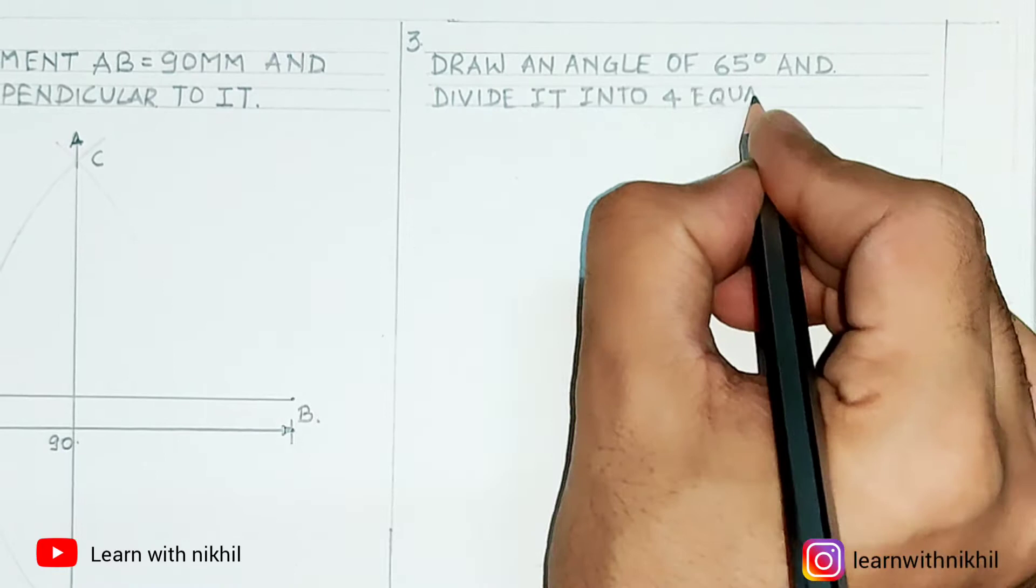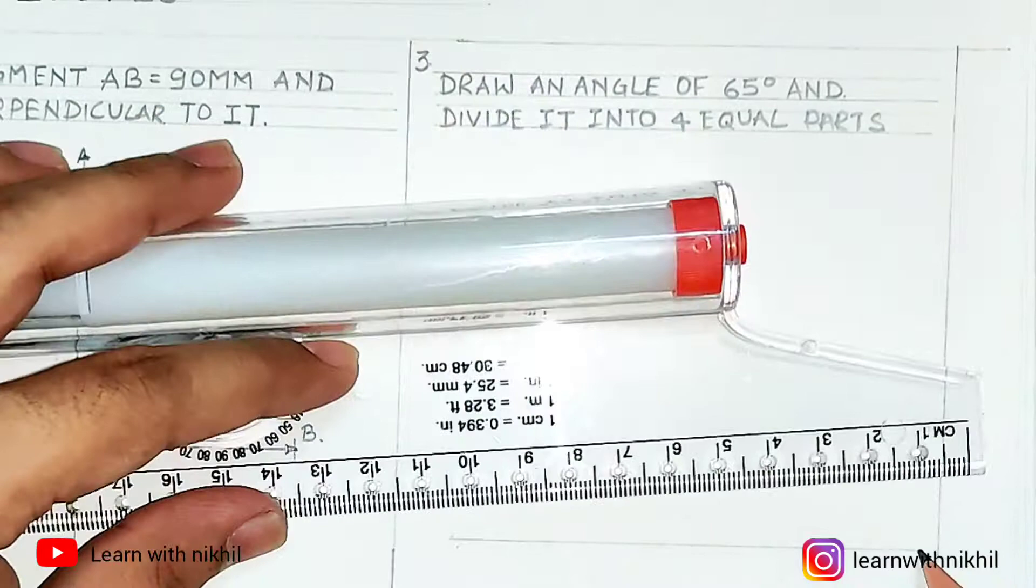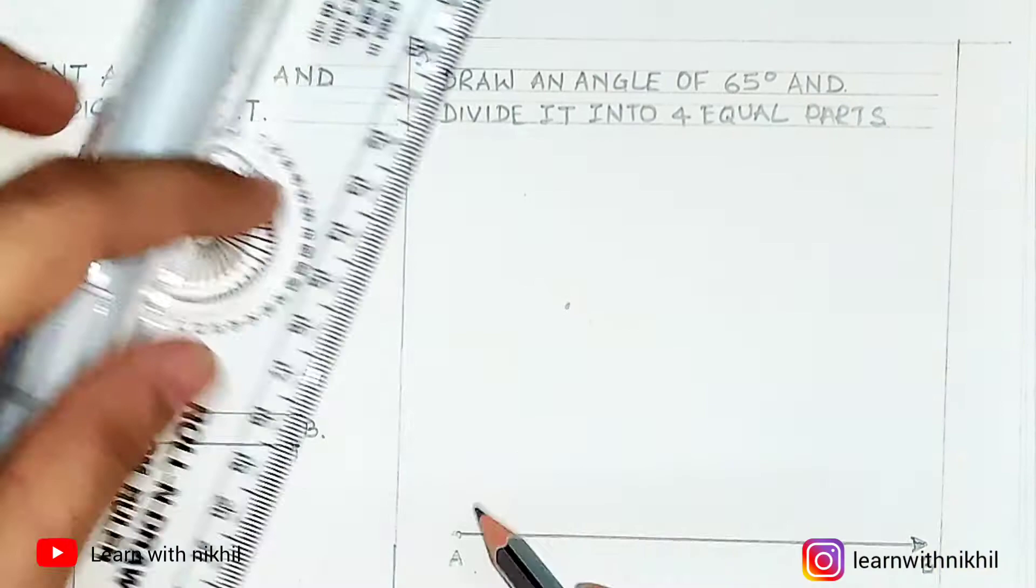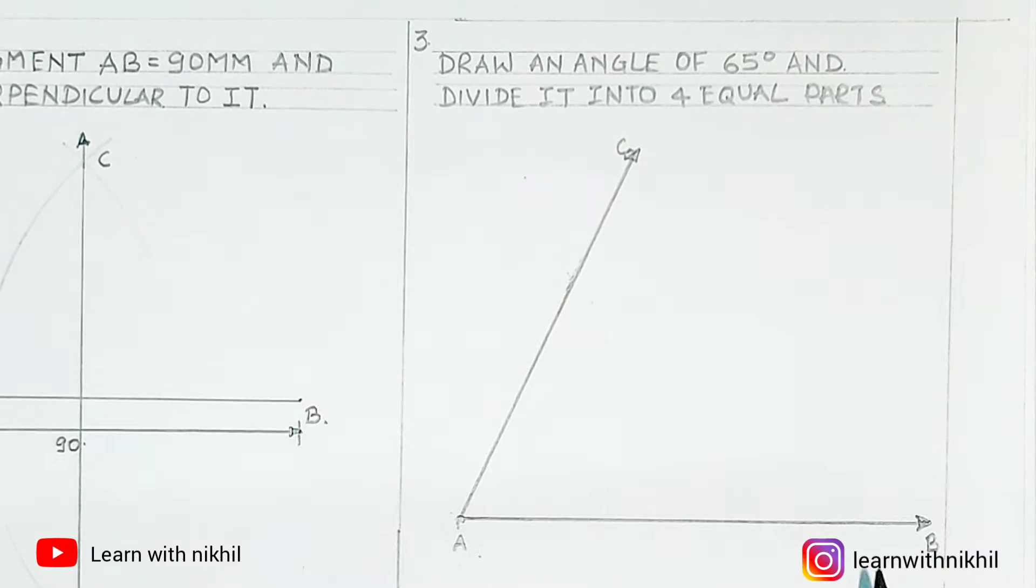Next is: draw an angle of 65 degrees and divide it into four equal parts. Any angle might be given and you should be able to divide the angle into any number of equal parts. Here it has been asked four equal parts. So I have drawn an angle of 65 degrees.